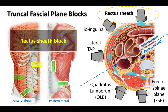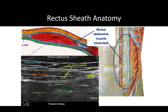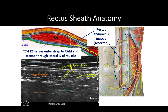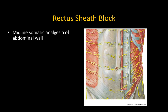The rectus sheath block is a very useful abdominal fascial plane block that will cover midline incisions both above and below the umbilicus. The rectus sheath is a fascial envelope encasing each half of the rectus abdominis muscle. The T7 to T12 nerves run forward in the TAP plane and they pierce the lateral edge of the rectus sheath, entering deep to the rectus abdominis muscle. These nerves ascend to the surface through the lateral half of the muscle, innervating the muscle along the way, and ending in the anterior cutaneous branches that supply skin and superficial tissues. A rectus sheath block is therefore ideal for providing somatic analgesia of the abdominal midline.